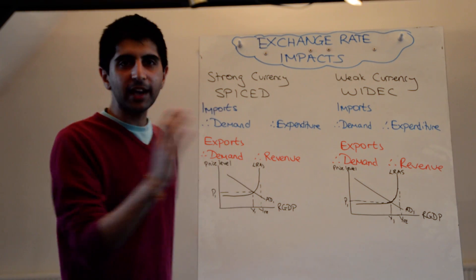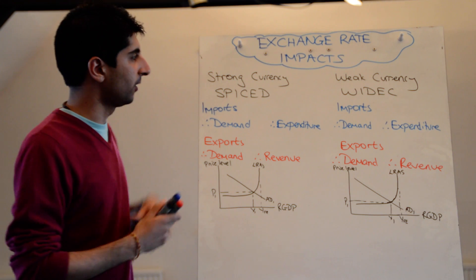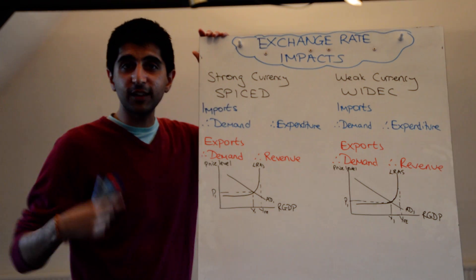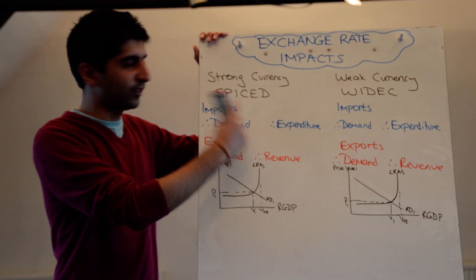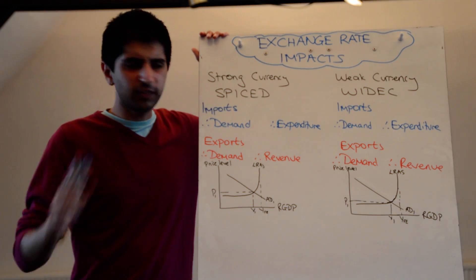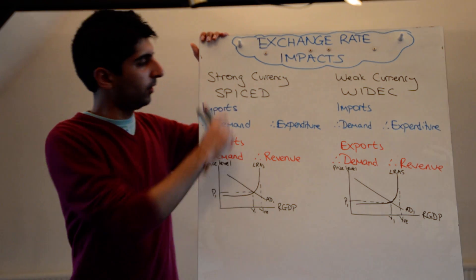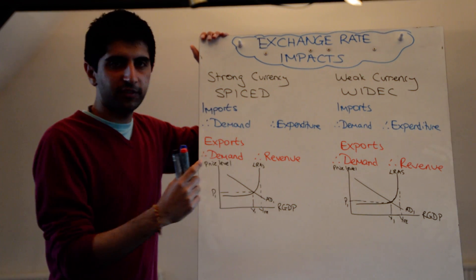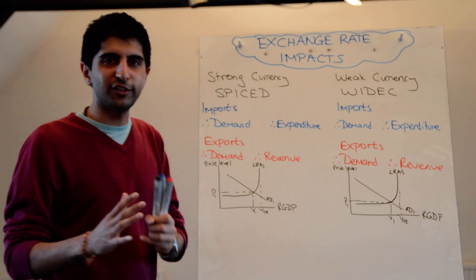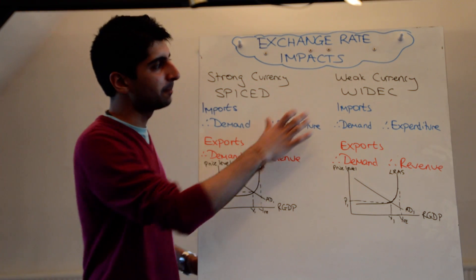Learn these acronyms — life becomes very simple when we do. So when a currency gets stronger, just think: SPICED. You shouldn't have to think anymore. Learn these acronyms, don't even question it. Life becomes easier when you learn it.